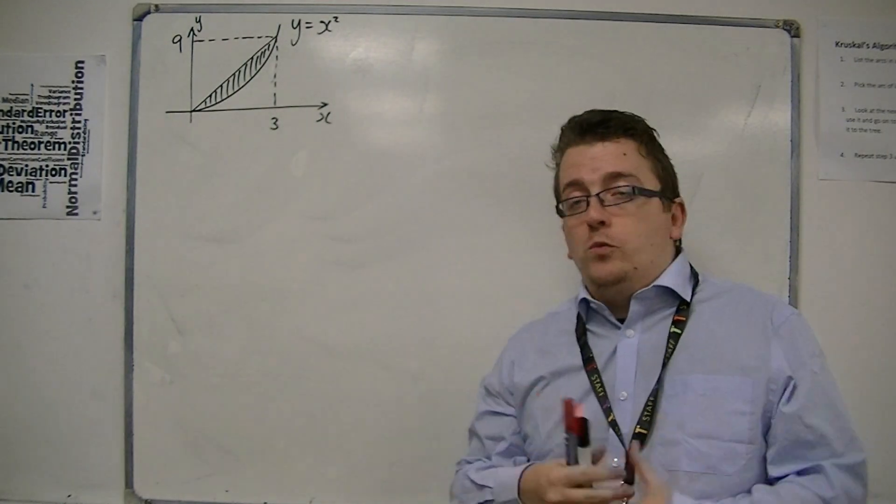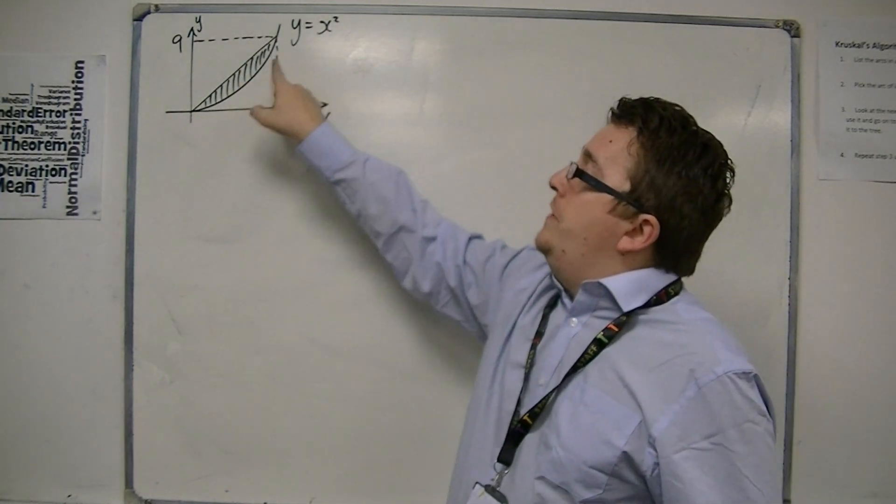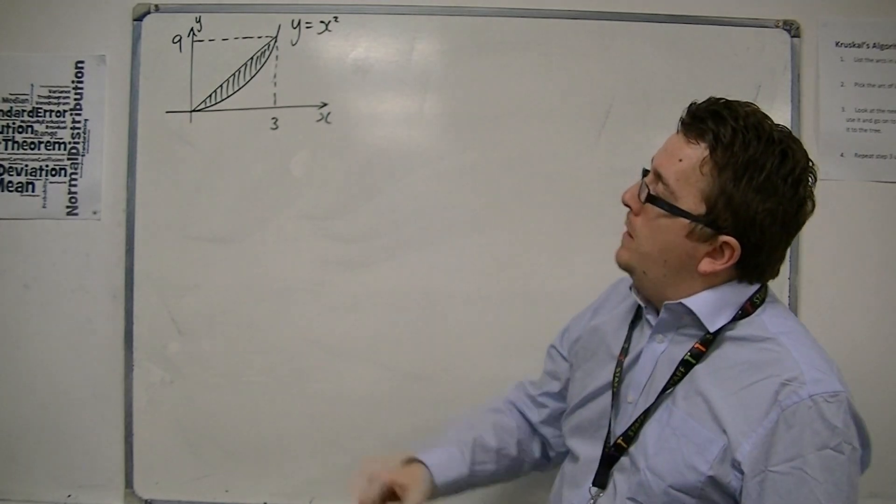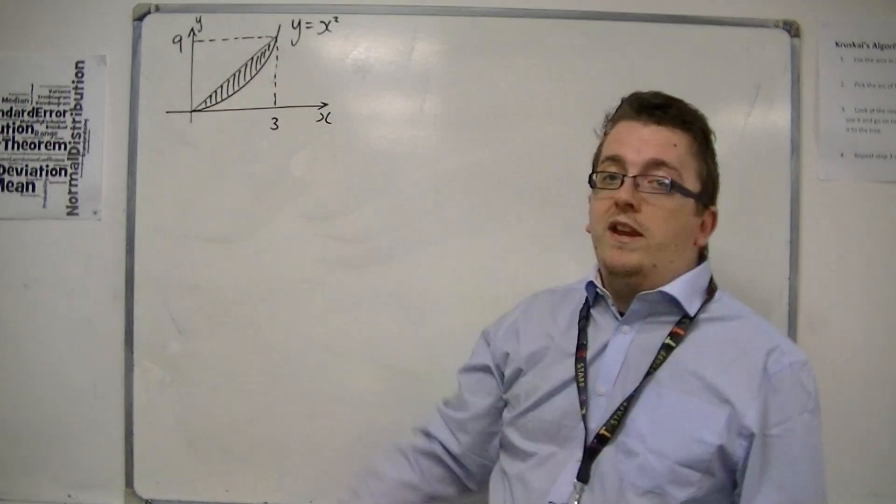So we've got y equals x squared, the curve of y equals x squared, and we need to find this shaded area, where from 0 to this point is a straight line.